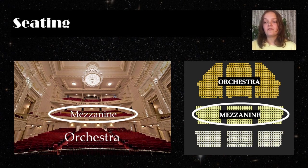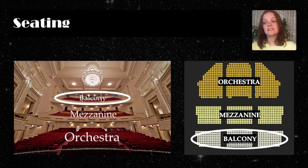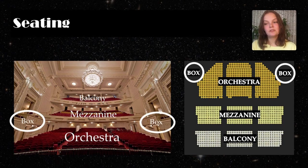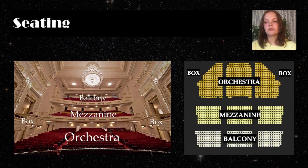Audiences may favor the mezzanine in shows with a spectacular technical aspect. The balcony is an additional third seating section, but some theaters only have an orchestra or a mezzanine. These are the seats that are highest up and often furthest away from the stage. And then there are box seats, which are seats located in the front, side, or above the stage. They're isolated spaces with five or fewer chairs, frequently shared by members of the same group.